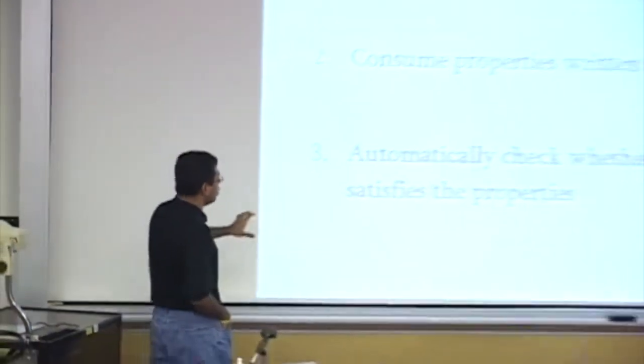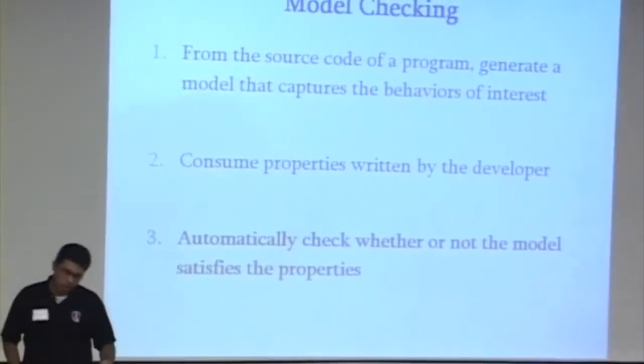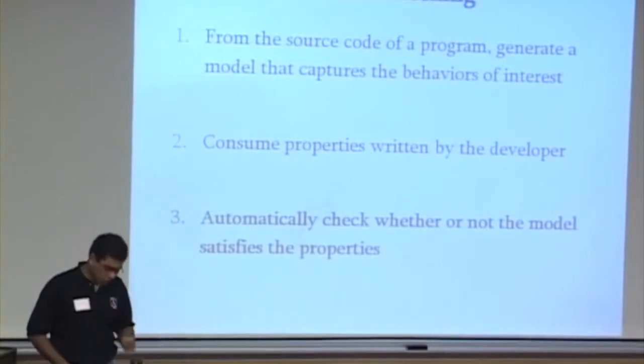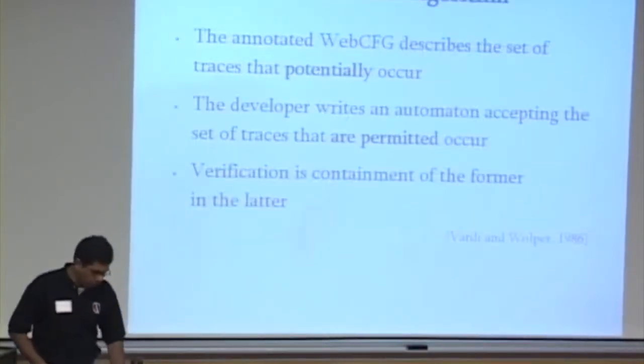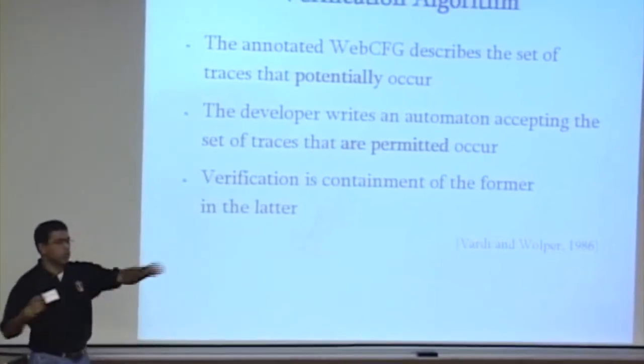So, now I need to tell you something about how model checking actually works. Step three. How do we do the check automatically? We use an idea that's one of the great ideas, I think, of computer science. It's due to Moshe Vardi and Pierre Wolper. It says the following. The web control flow graph describes a set of traces, right? You can just think of all the infinite runs of this control flow graph. It's a set of strings, right?